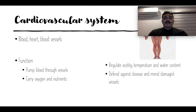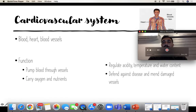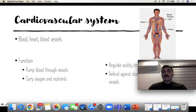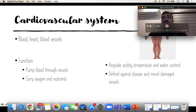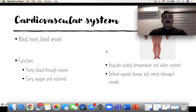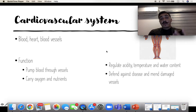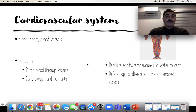The cardiovascular system is basically the blood moving around our body, the heart, and the blood vessels — arteries and veins. The main function of the cardiovascular system is to pump blood through the vessels to carry oxygen and different nutrients, regulate temperature, water content, and acidity inside our body, and to defend against disease or damaged vessels.